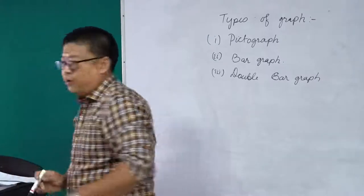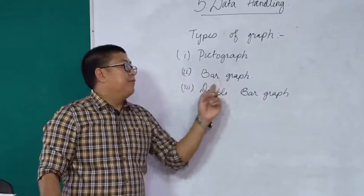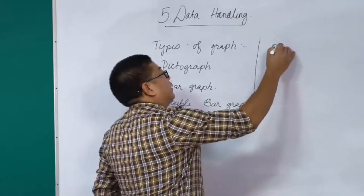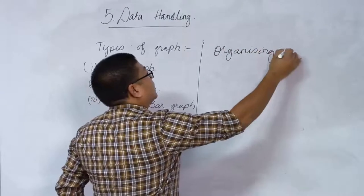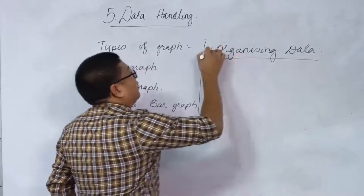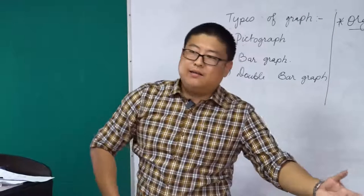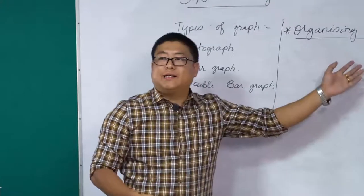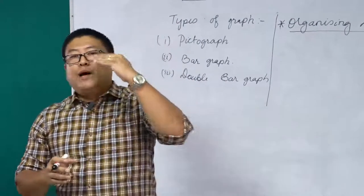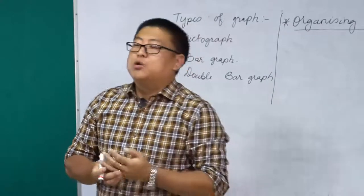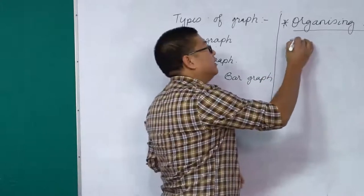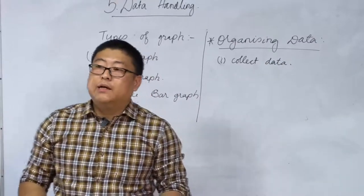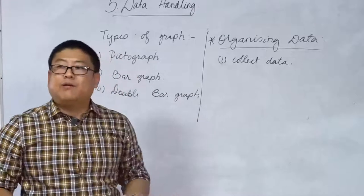Those are the three types of graphs: pictograph, bar graph, and double bar graph. The next topic will be organizing data. Simply collecting data and keeping it jumbled up is not going to make any meaning — or it will be very confusing. What we are going to do is organize data in such a manner that with one look, we can understand what it actually means. The first thing we do is collect data; without collecting data we cannot organize it.